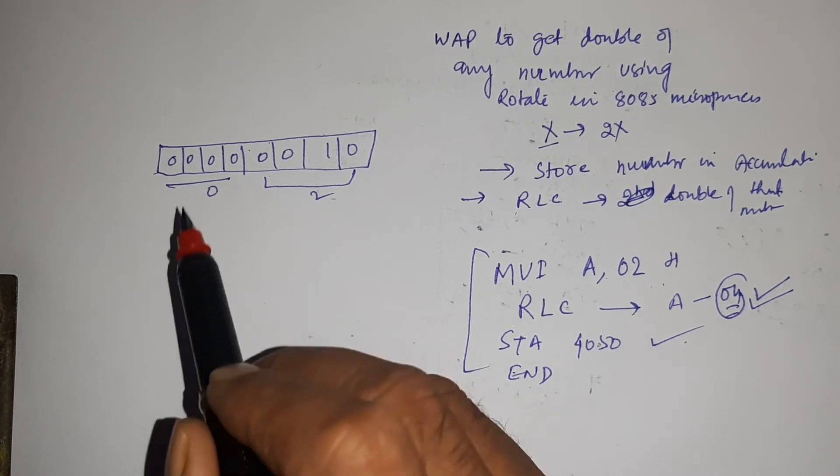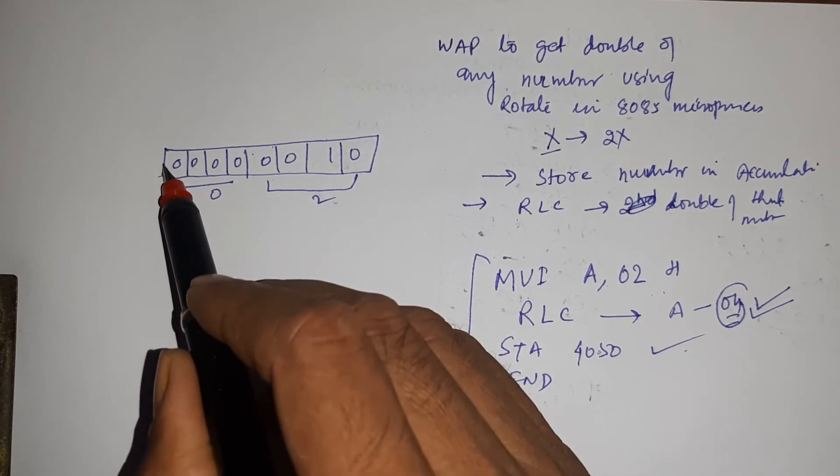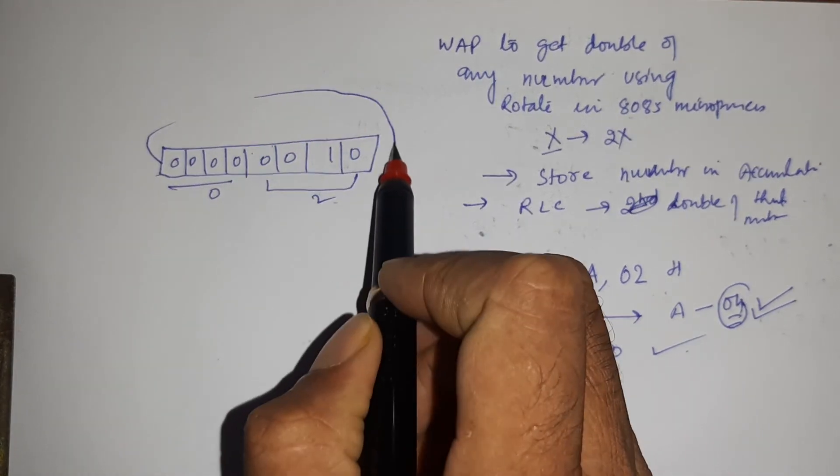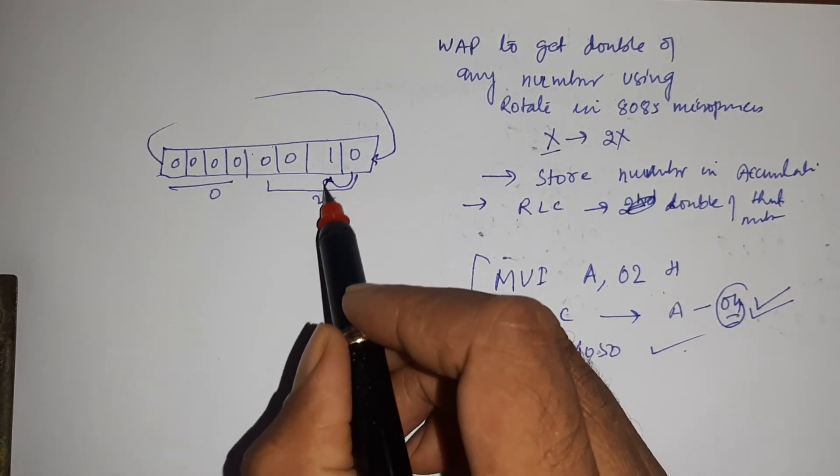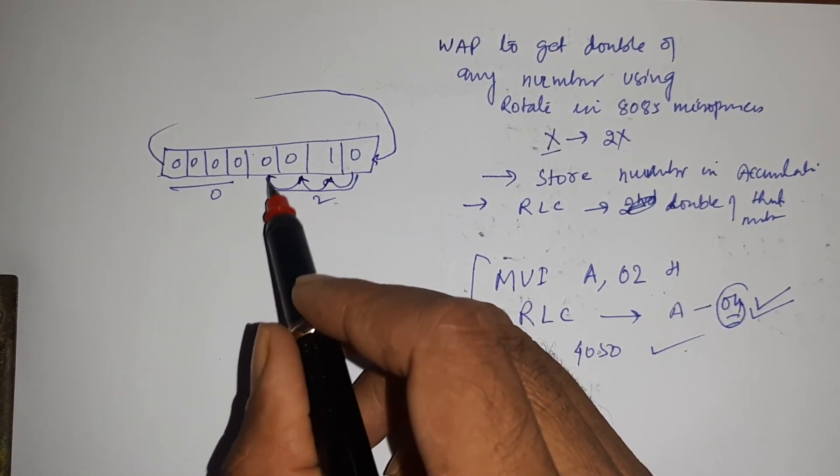So what happens, this bit will shift here and each bit will move left by one.